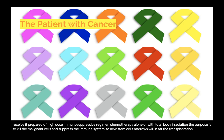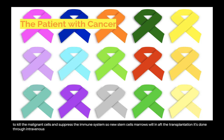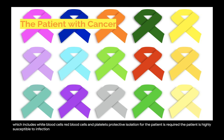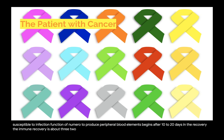The transplantation is done through intravenous infusion of the donor's marrow stem cells. Pancytopenia — a reduction in all cellular elements of the blood, including white blood cells, red blood cells, and platelets — occurs, requiring protective isolation. The patient is highly susceptible to infection. Function of the new marrow to produce peripheral blood elements begins after 10 to 20 days. Immune recovery is about 3 to 12 months, and long-term recovery is about 1 to 3 years.